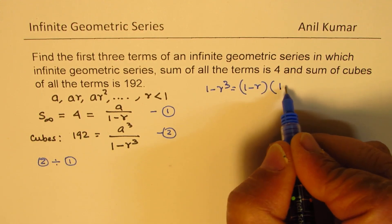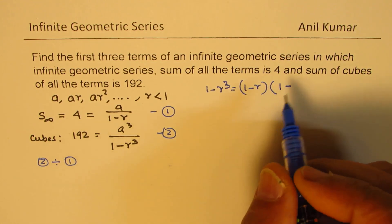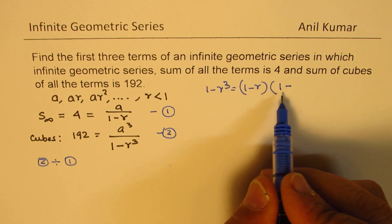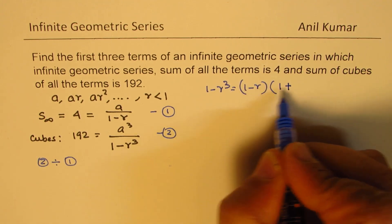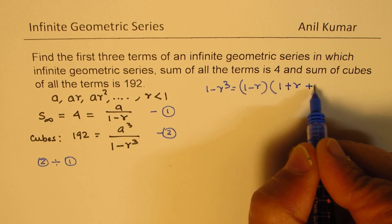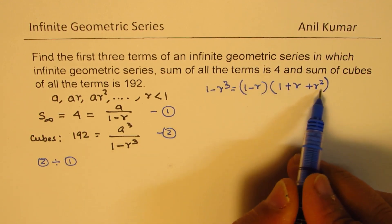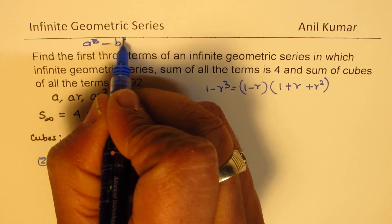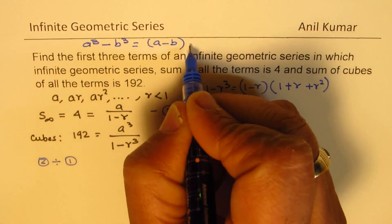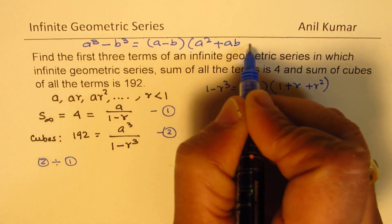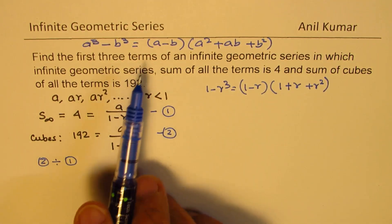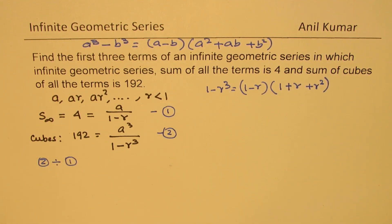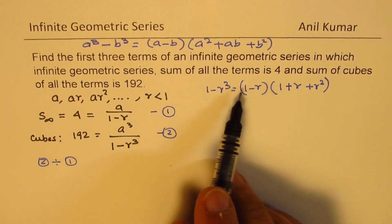1 minus R times A cube minus B cube, right? If I have A cube minus B cube, I could write this as A minus B times A square plus AB plus B square. So 1 and R. That is how you get your formula. Here is a common factor and the factor is 1 minus R, which will get cancelled.